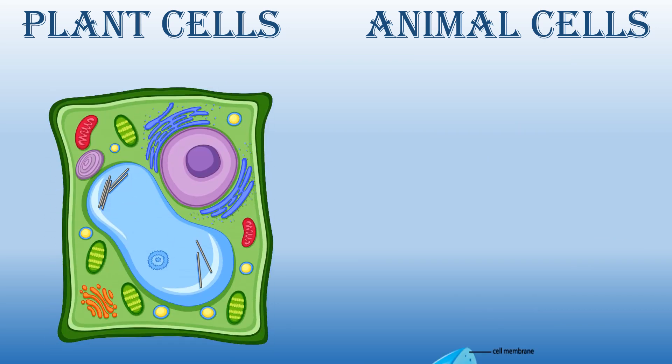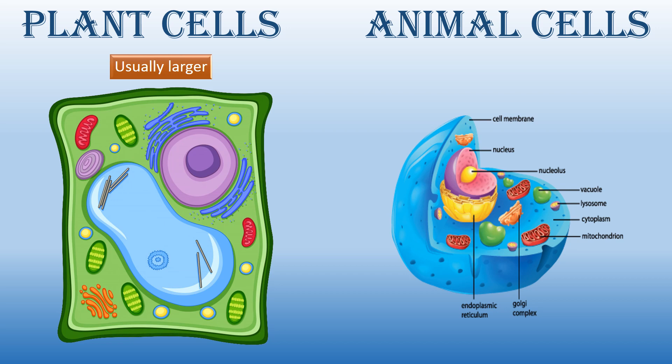The next point is size. Plant cells are usually larger in size, whereas animal cells are comparatively smaller than plant cells.